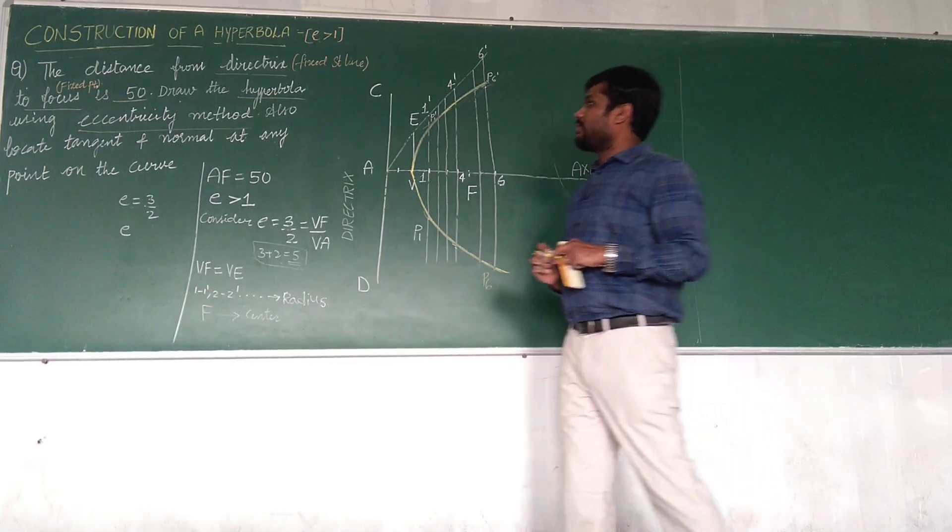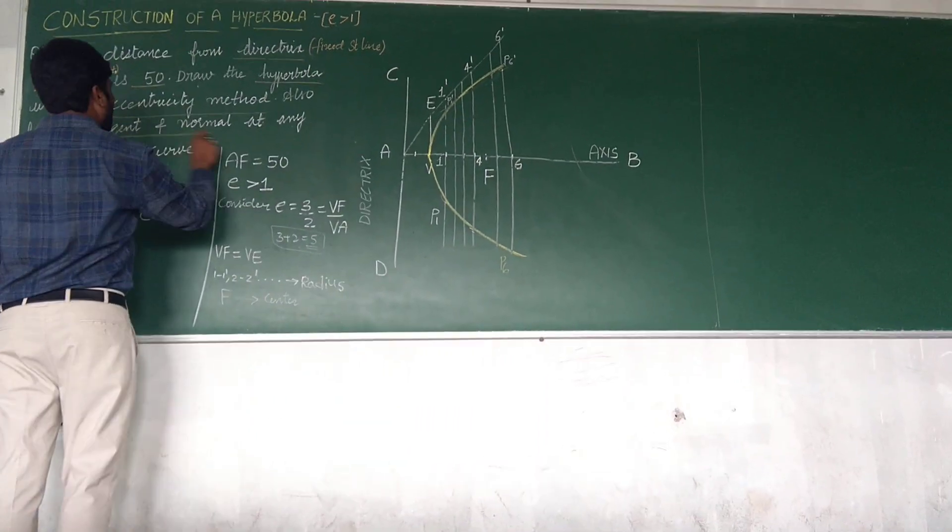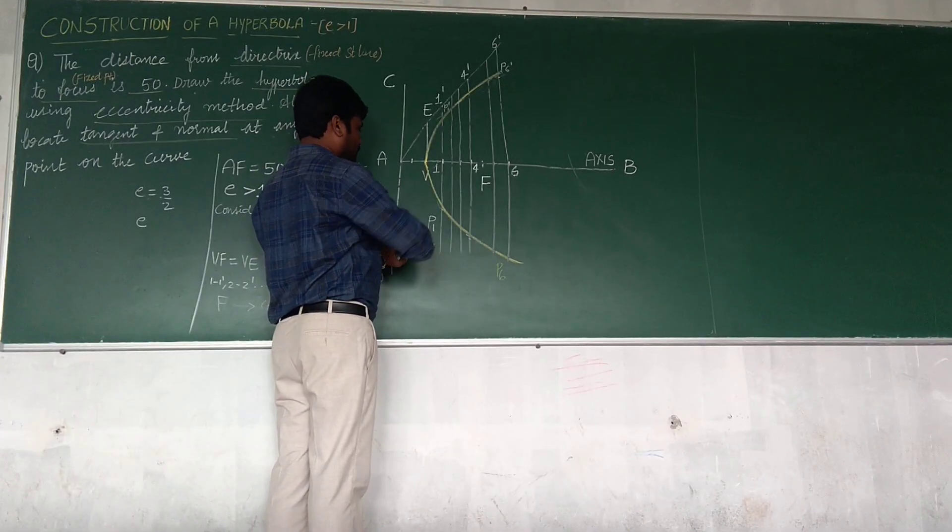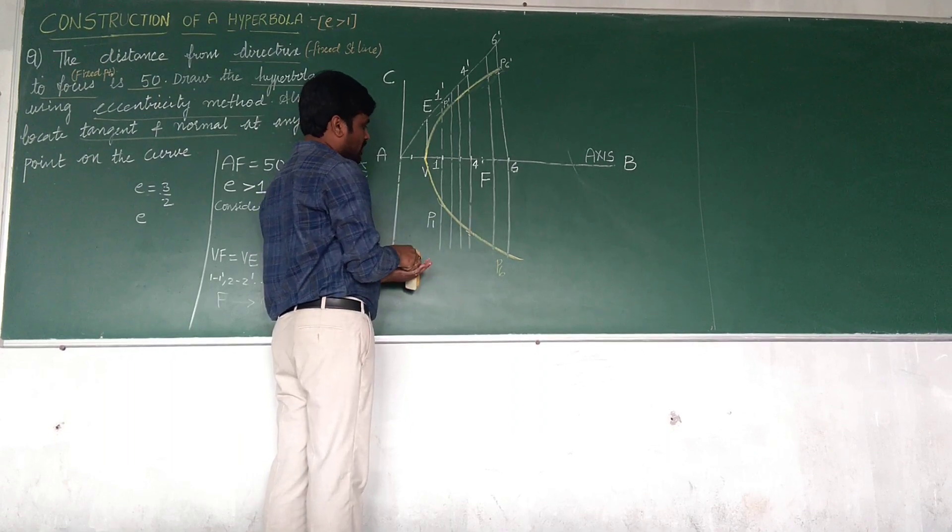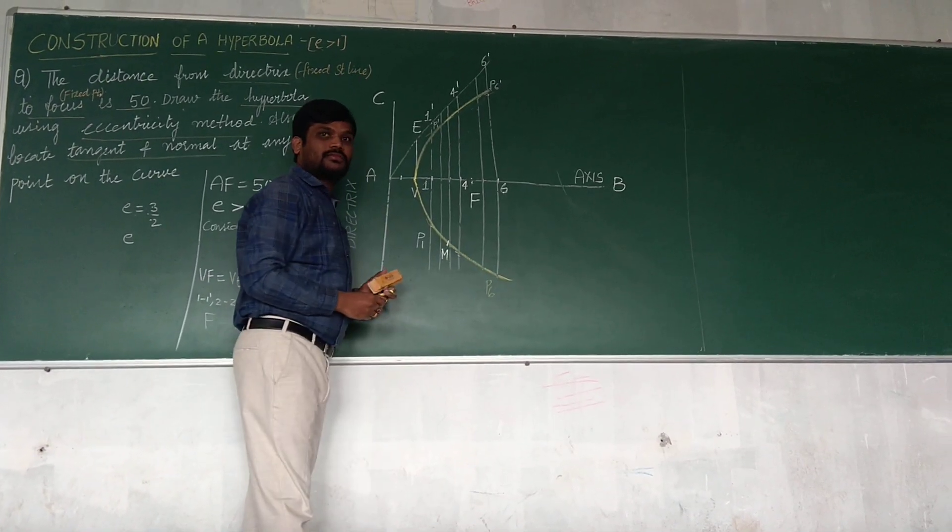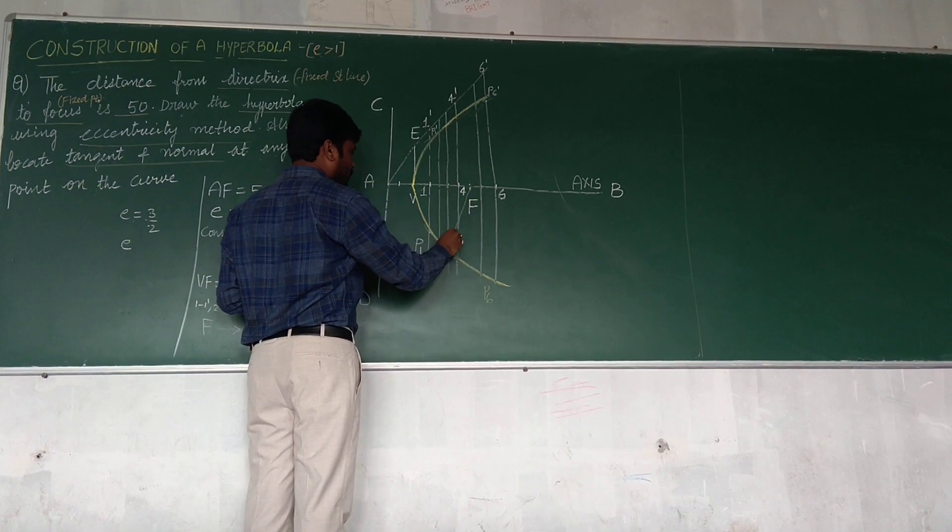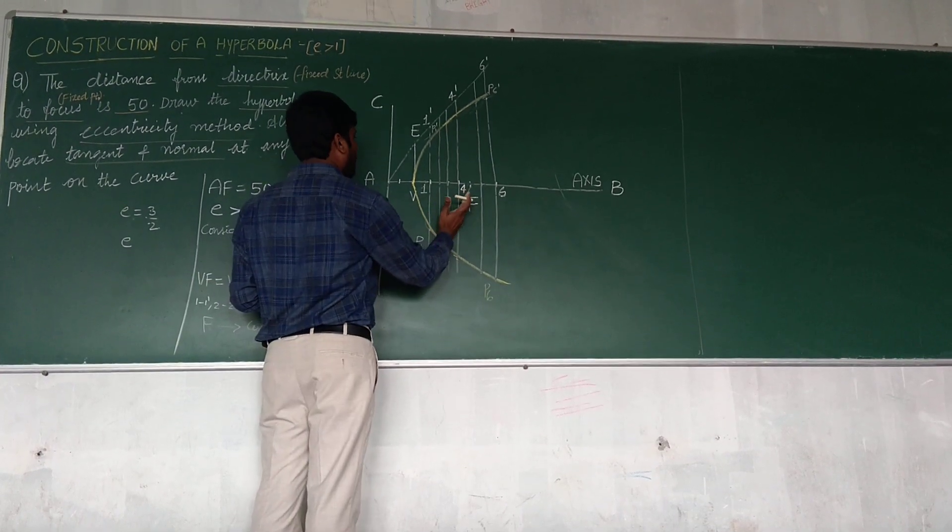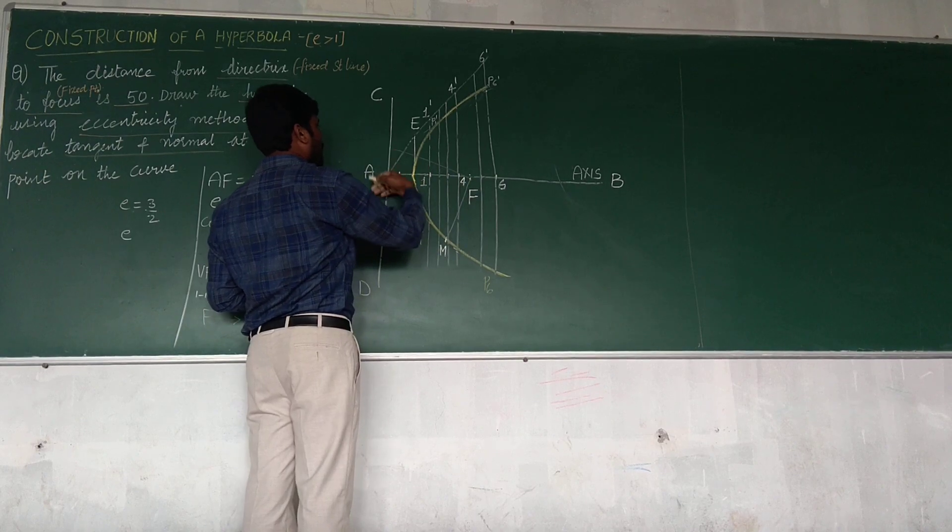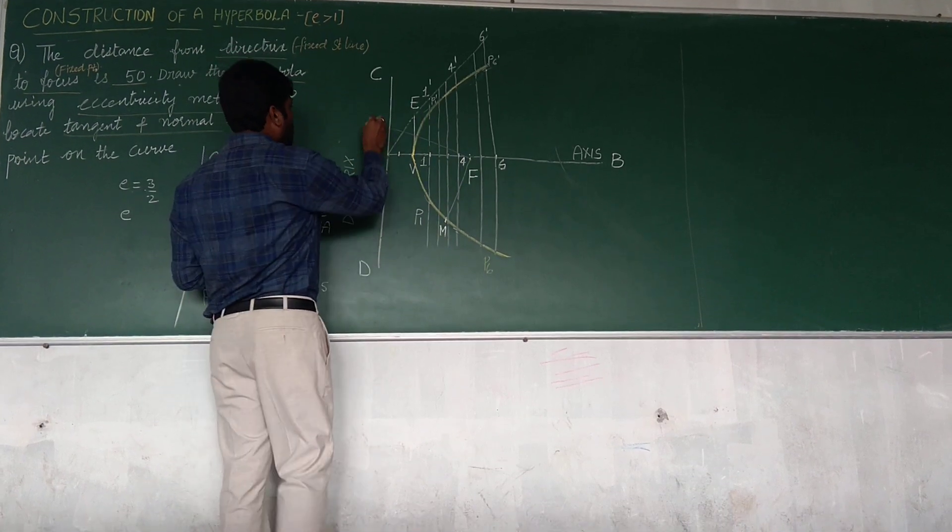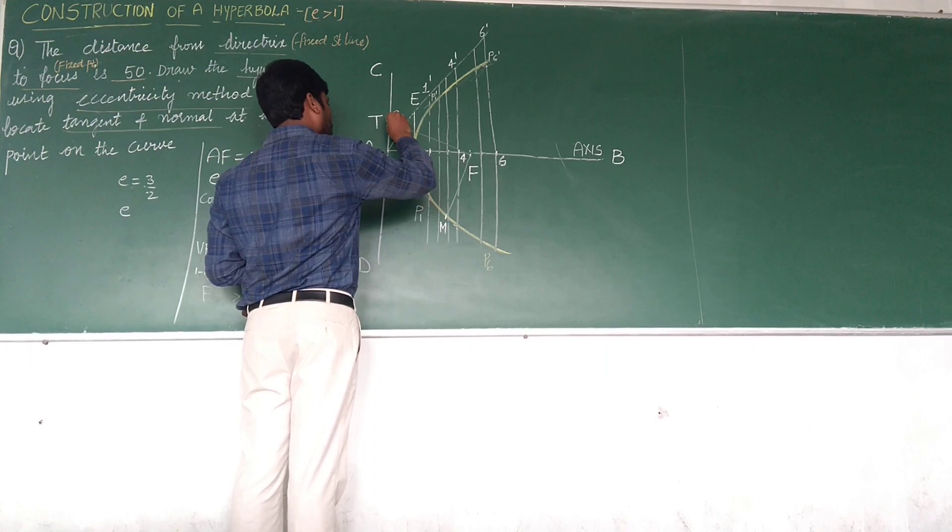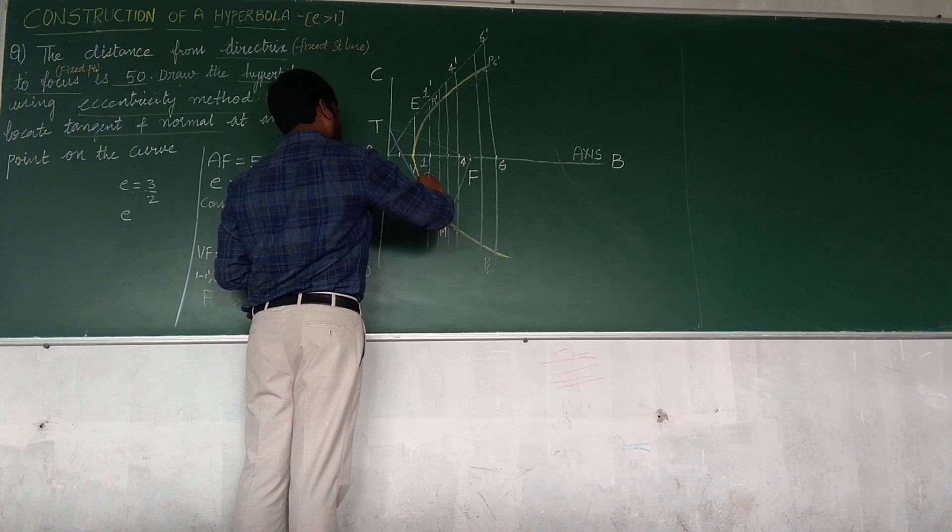Next, he has also asked in the question to draw tangent and normal at any point on the curve. To trace a tangent and normal, locate a point at some distance. He asked to draw anywhere, so my point is for example here, so similar method. So joining this M to F. Next MF, draw a perpendicular line to MF, 90 degree. So this may be reaching like the tempo or below, point named as T.